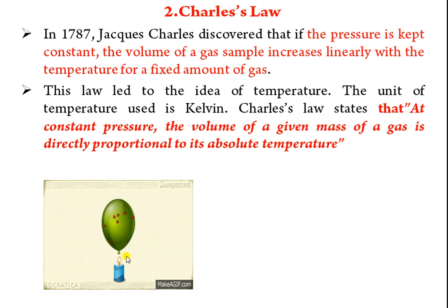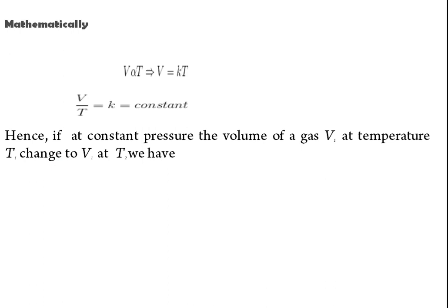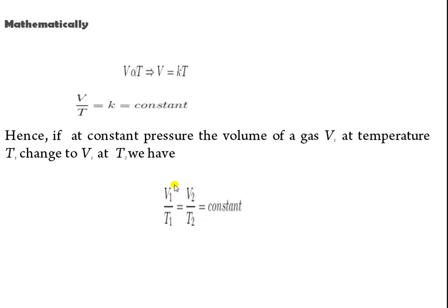As temperature increases, volume increases. Mathematically: V ∝ T, so V/T = constant. If a gas has volume V₁ at temperature T₁ and changes to V₂ at T₂, then the equation becomes V₁/T₁ = V₂/T₂ = constant.